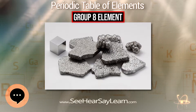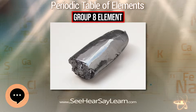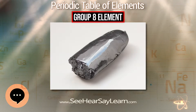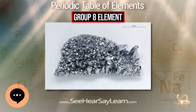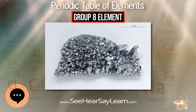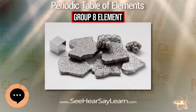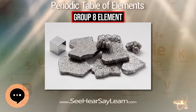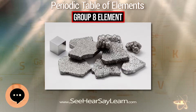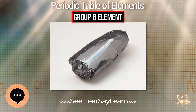Iron is an essential nutrient for all living organisms, from archaea to humans. It is a major component in hemoglobin, a protein that makes blood red and transfers oxygen to muscles, and is also found in many other proteins. Ruthenium, osmium, and hassium have no known role in the human body.